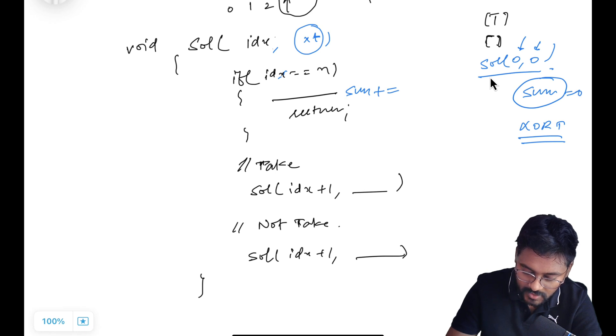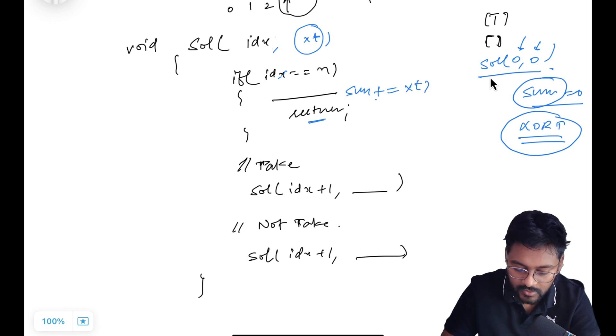Global sum, initialize with 0, capture all the XOR totals. So sum plus equal to XOR total. And don't forget to return. Because now this is my terminating case.